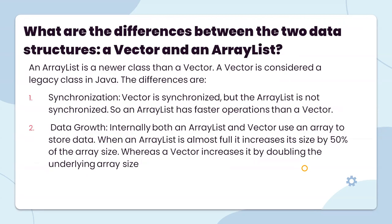What are the differences between Vector and ArrayList? ArrayList is a newer class than Vector; Vector is considered a legacy class in Java. Regarding synchronization: Vector is synchronized, but ArrayList is not synchronized, so ArrayList has faster performance than Vector. Internally, both ArrayList and Vector use an array for storing data. When ArrayList is almost full, it increases its size by 50% of the array size, whereas Vector doubles the underlying array size.